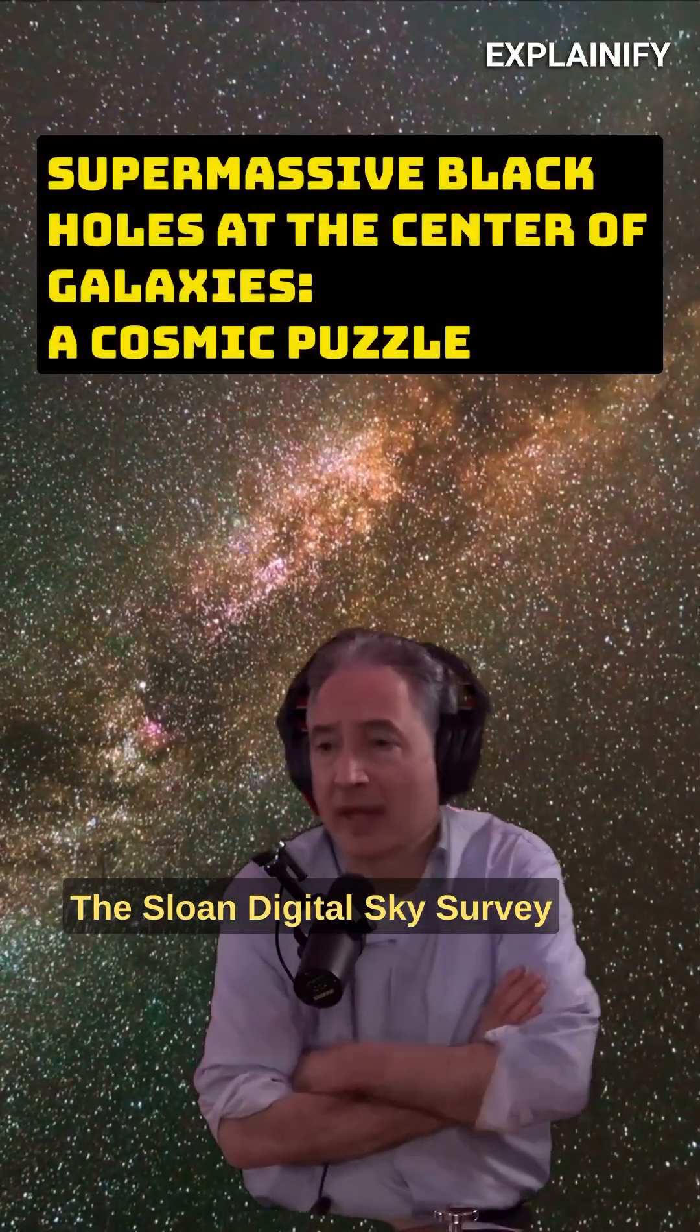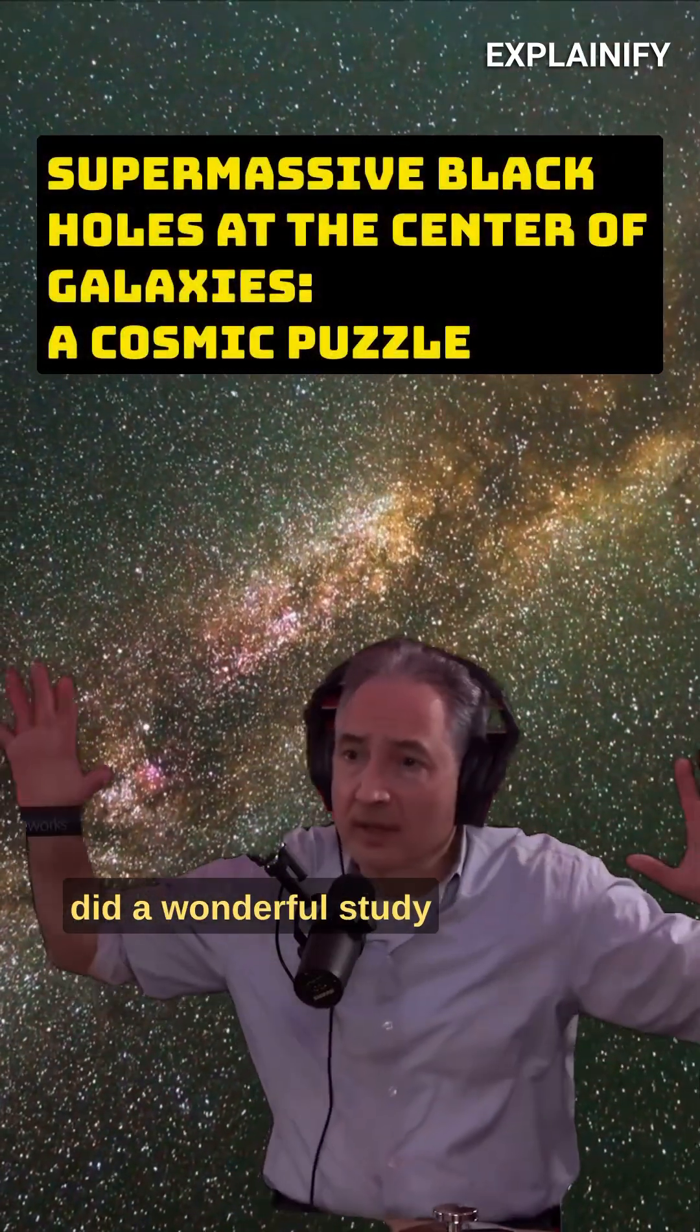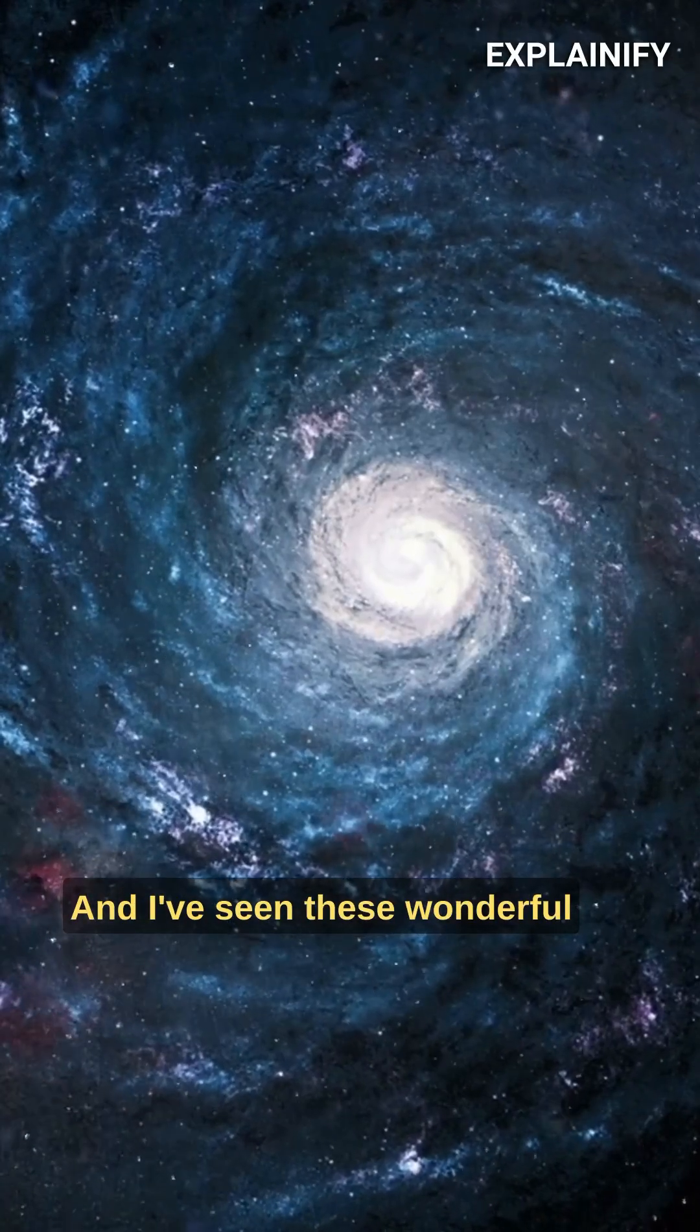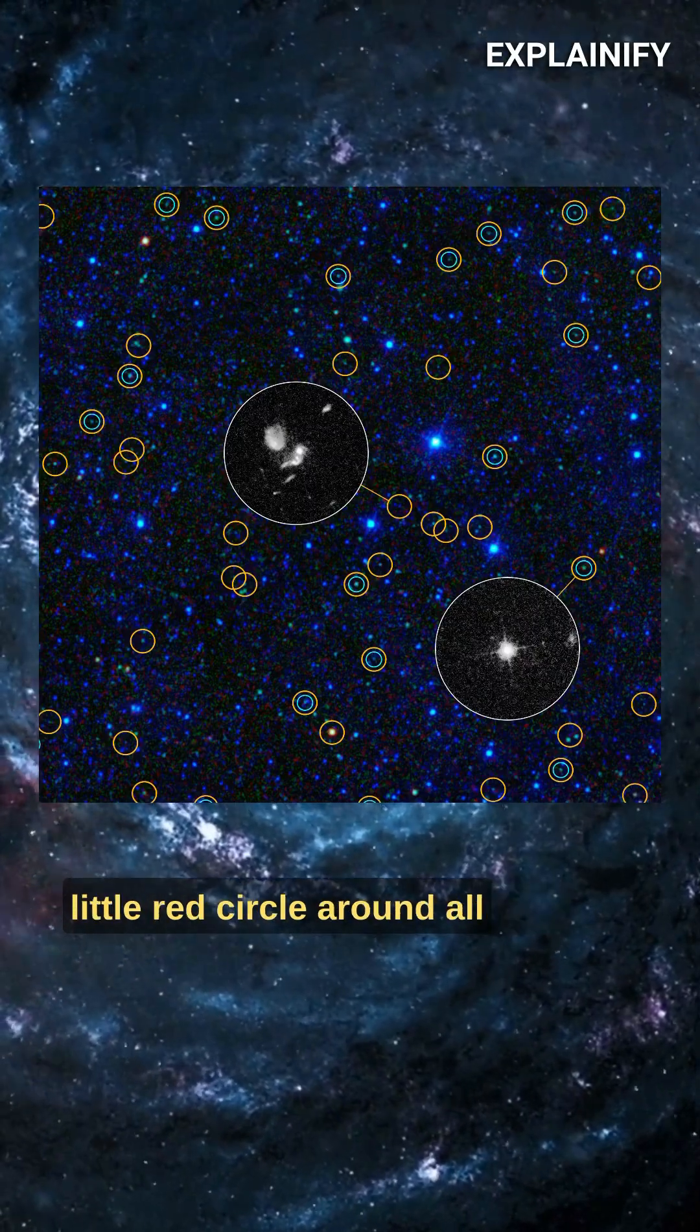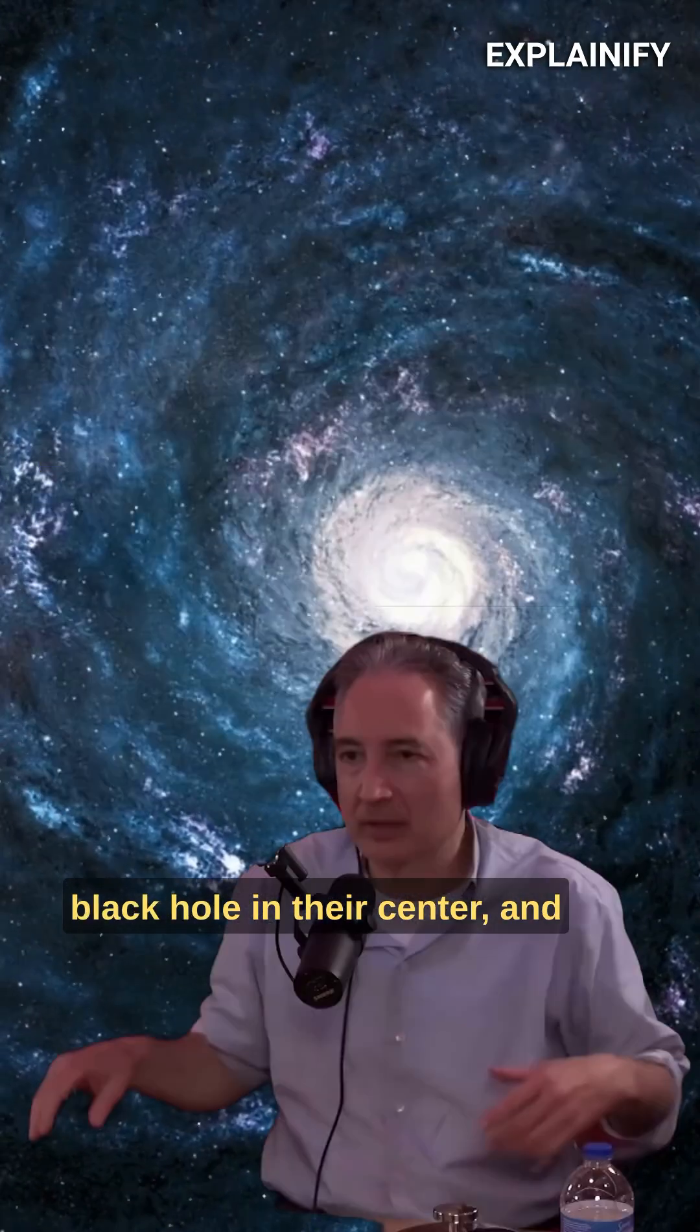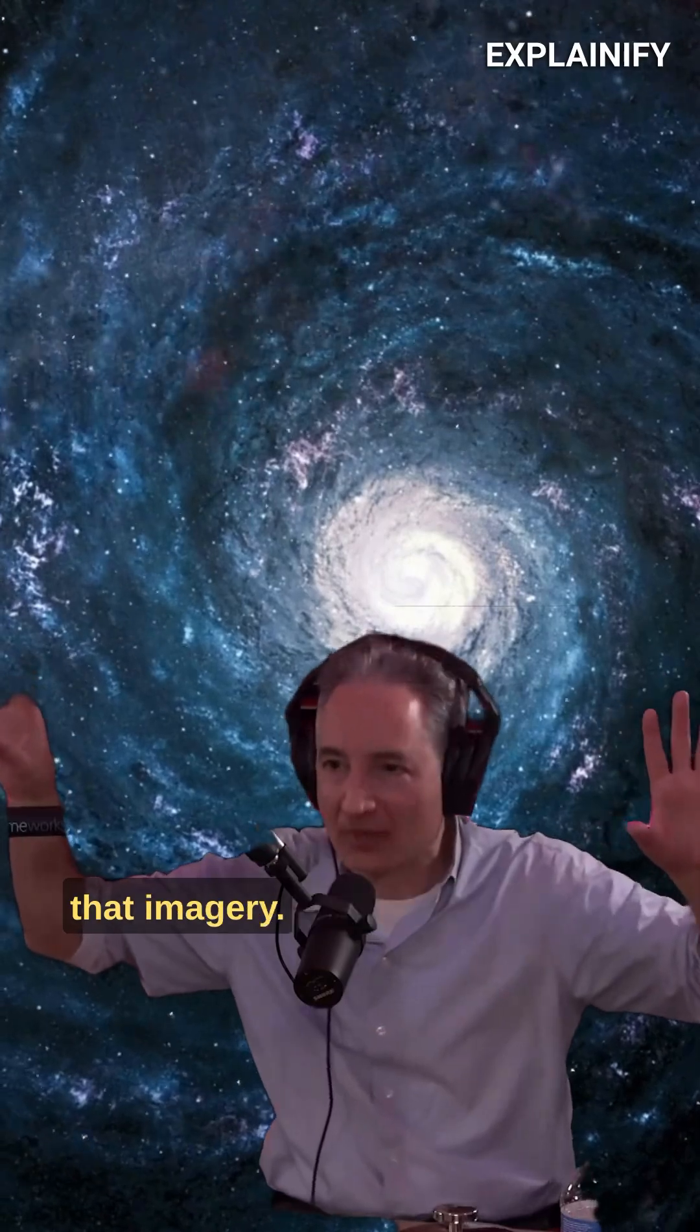The Sloan Digital Sky Survey did a wonderful study of a vast number of galaxies. I've seen these wonderful images where they put a little red circle around all those galaxies that have a black hole in their center, and there are red circles all over that imagery.